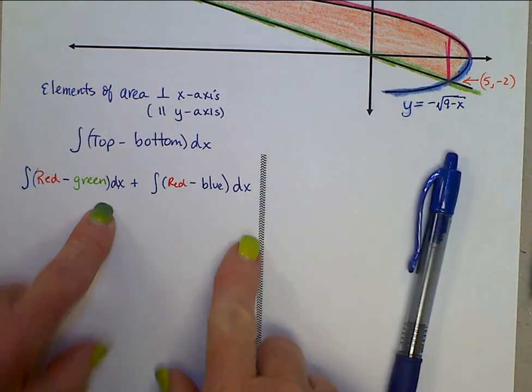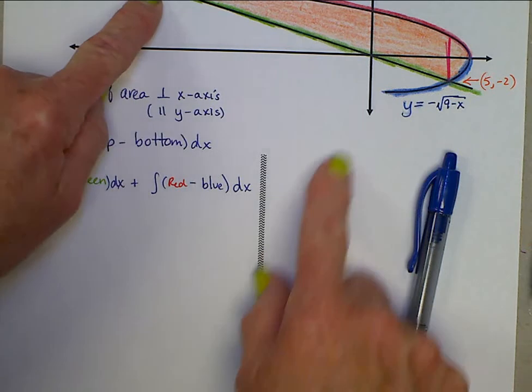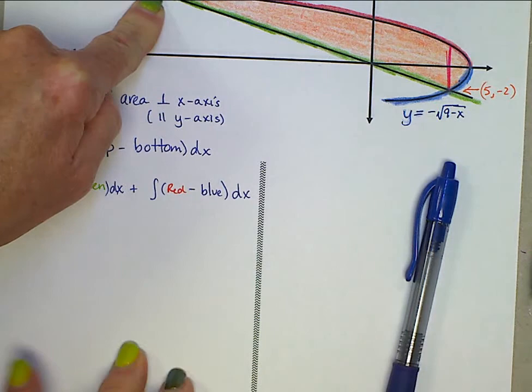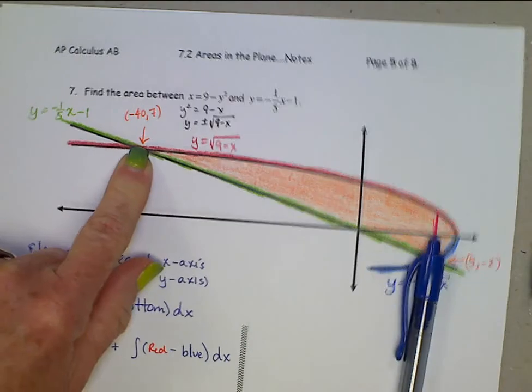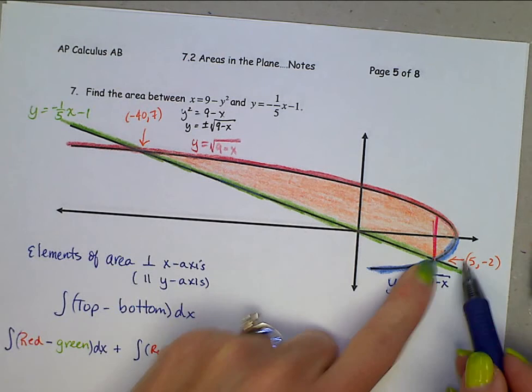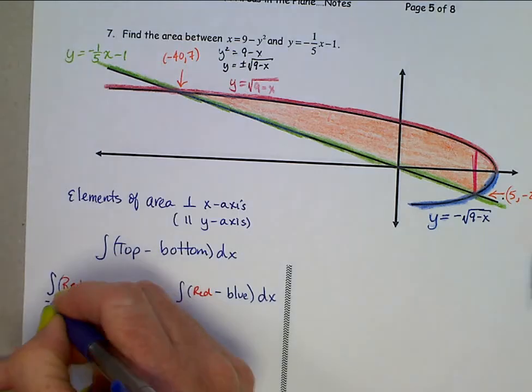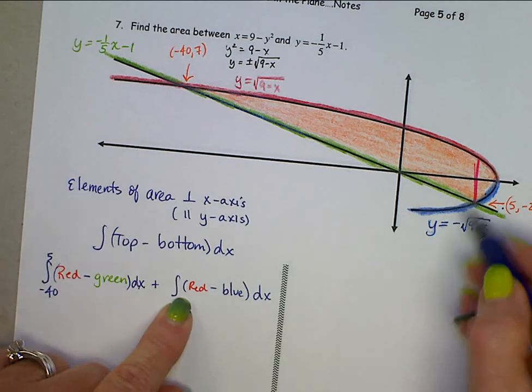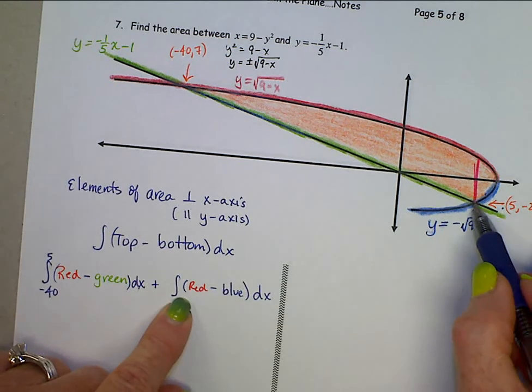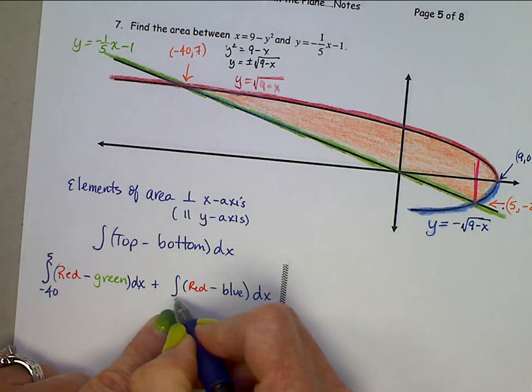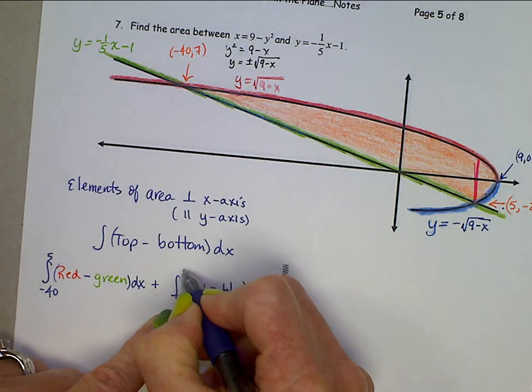Bounds, where do we start? Red minus green starts right here at negative 40 for the x, up to x value right there at 5. So from negative 40 up to 5. And red over blue gives us 5 all the way up here to this point. That's at 9, 0. So this is going from 5 to 9.